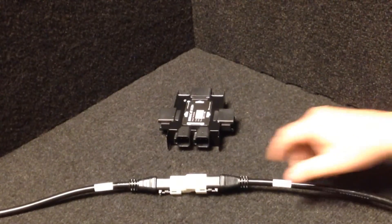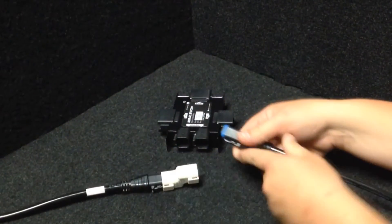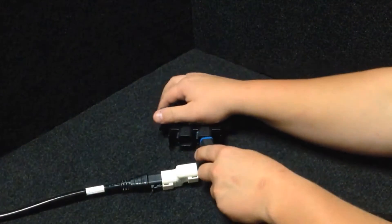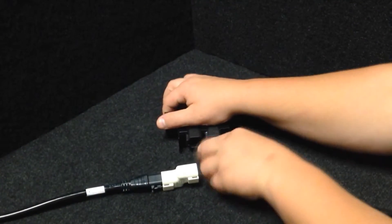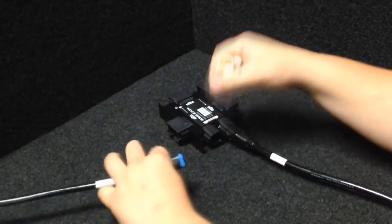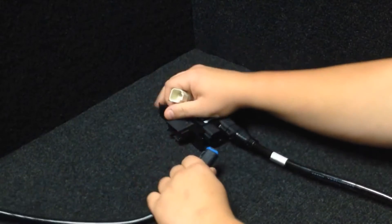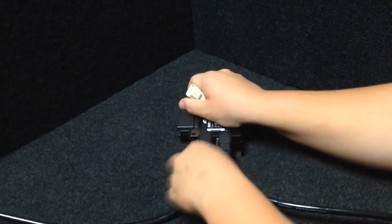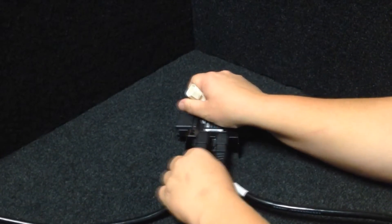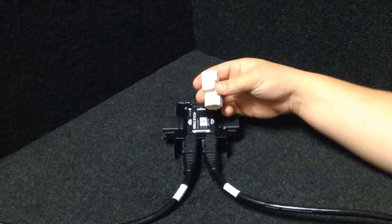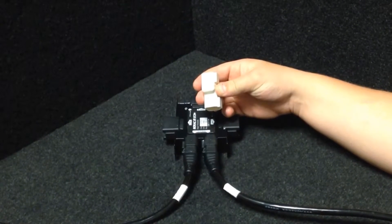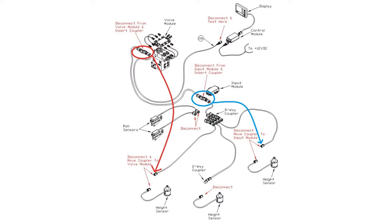Once you have checked the Versions list, power down the display. Head back to the input module and remove the terminator that was used to replace it. Plug the two 6-pin connectors back into the input module. Return the terminator to its original location. Again, connect the terminator to the network cable and not the sensor.